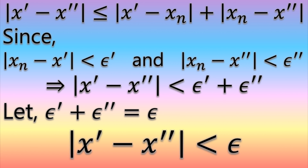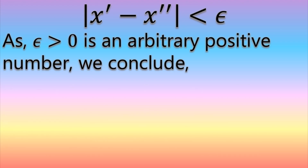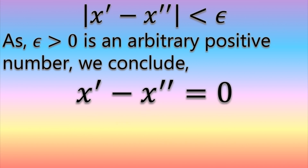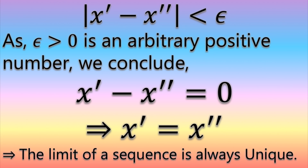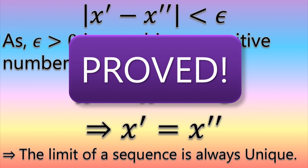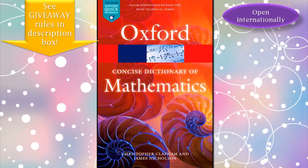Now, since epsilon is an extremely small positive number slightly greater than zero, the difference between x' and x'' is almost negligible. We can say mathematically that x' − x'' equals zero, which implies x' = x''. This proves that both limits of the sequence xₙ are actually the same — in other words, a limit is always unique. That's it for the video; please share and subscribe. Take care.